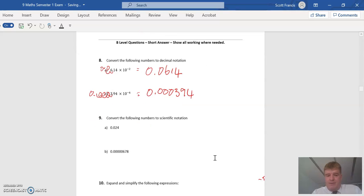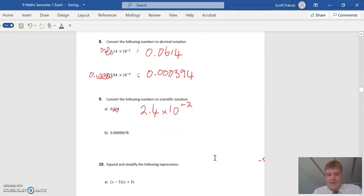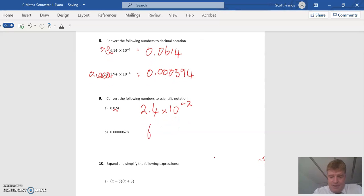Opposite way we've got to do. Always going to start 2.4 by 10 to the something. In the negative direction, it's going to move 1, 2. Move negative 2, so 10 to the negative 2. Same thing here. It's going to be 6.78 by 10 to the... 1, 2, 3, 4, 5, 6. 10 to the negative 6.